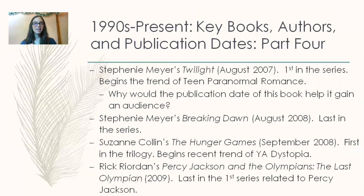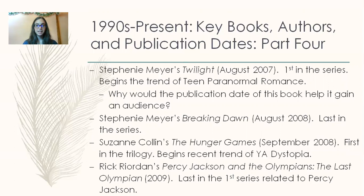Stephanie Meyer's Twilight comes out in August 2007, the first in that series, starting the trend of teen paranormal romance. After the Harry Potter series ended, many young adults were waiting for another book or series to start, so Twilight came out at an opportune time. Stephanie Meyer's Breaking Dawn is published in August 2008, the last in that series. Suzanne Collins' The Hunger Games, published in September 2008 — the first in the trilogy — begins the recent trend of YA dystopia, reviving that dystopian trend. Rick Riordan's Percy Jackson and the Olympians: The Last Olympian is published in 2009.